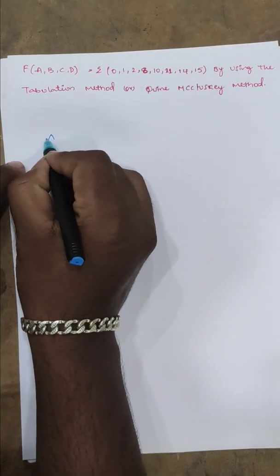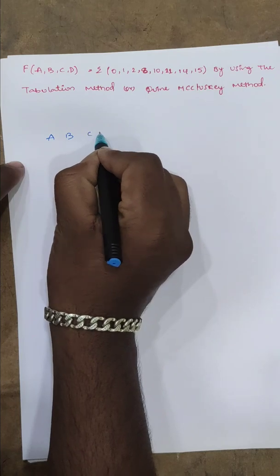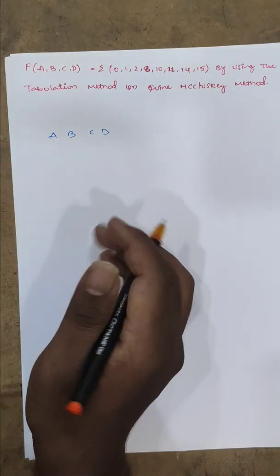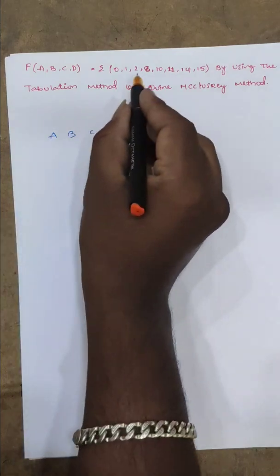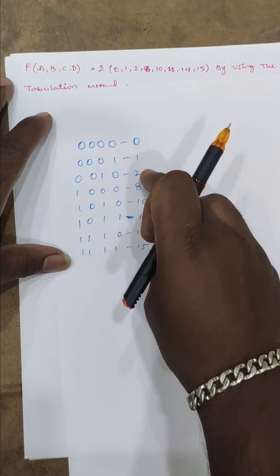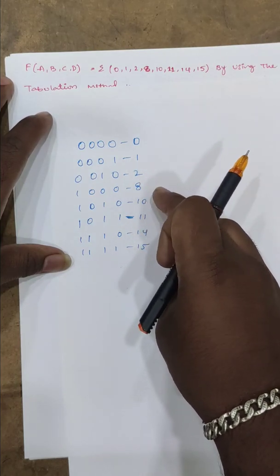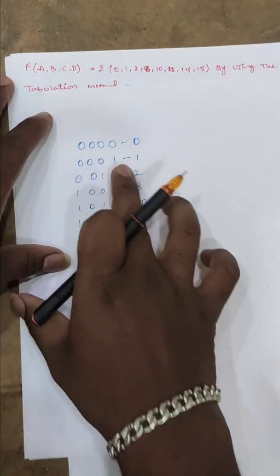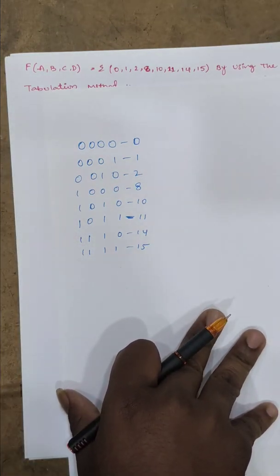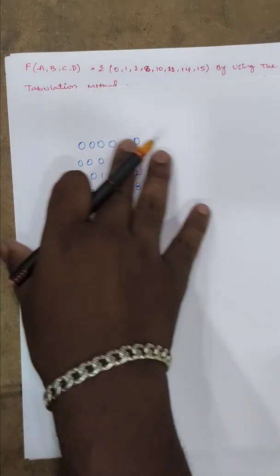First, we have four variables: A, B, C, and D. We have a question with minterms 0, 1, 2, 8, 10, 11, 14, 15. Now we convert these to binary numbers. The Tabulation Method is very easy once we have the binary numbers.